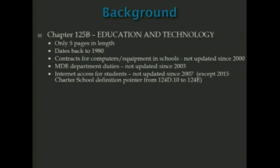The section titled Internet Access for Students has not been updated since 2007. In 2015, there was just a minor change — the definition of a charter school pointer was changed. So aside from that, it hasn't changed since 2007. The topic of technology and students, for all intents and purposes, it's been at least a decade since there's been any changes, and that's a lot of time.